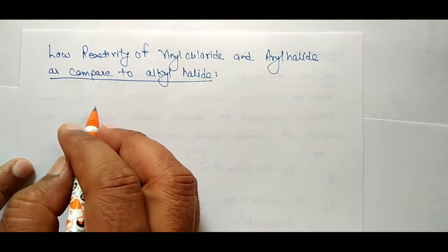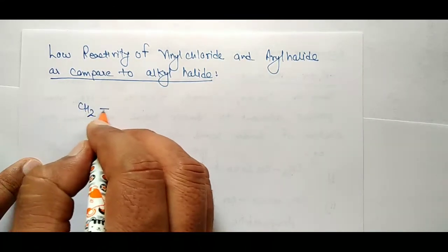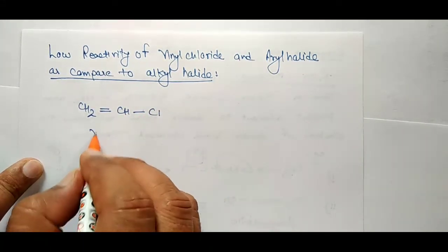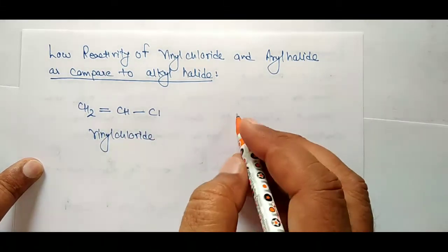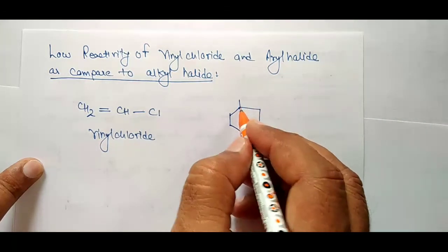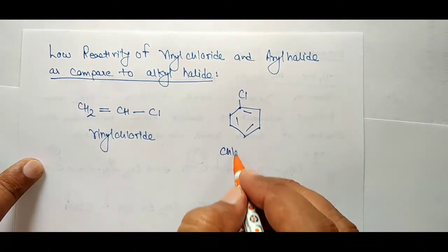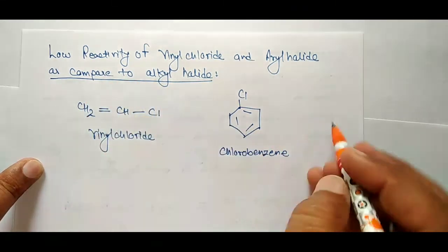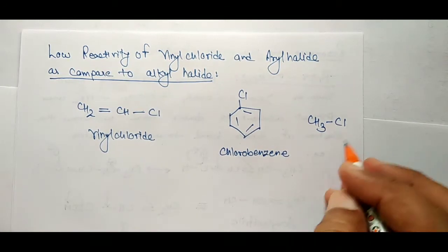So let's see — we have here CH2 double bond CH and Cl, this is called vinyl chloride. And then the aryl halide is this structure here — this is called chlorobenzene.